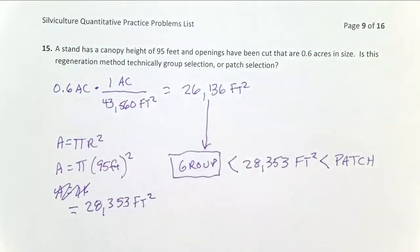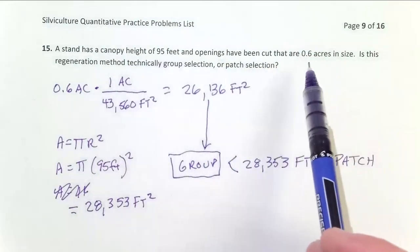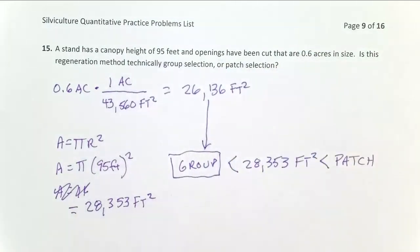So that's how you can determine from the geometry of your harvesting whether a particular stand is being managed via group or patch selection.